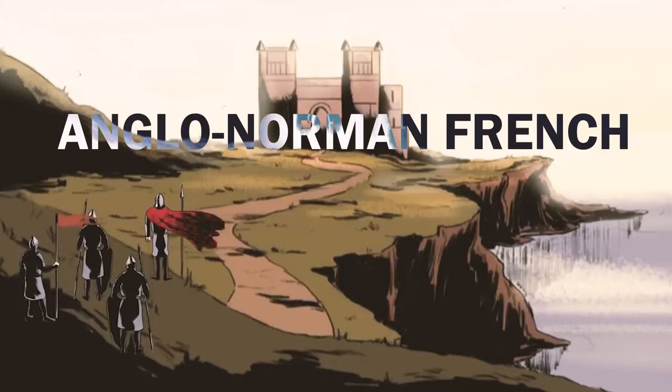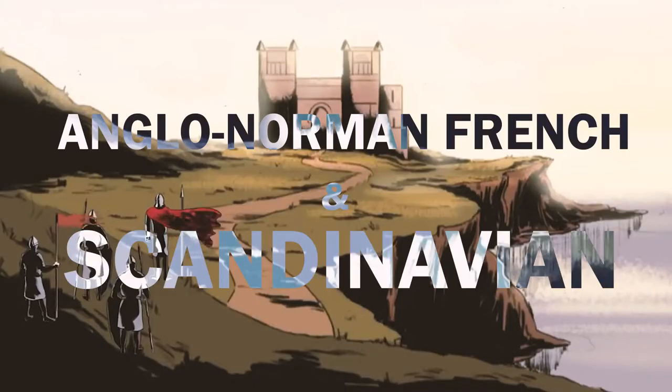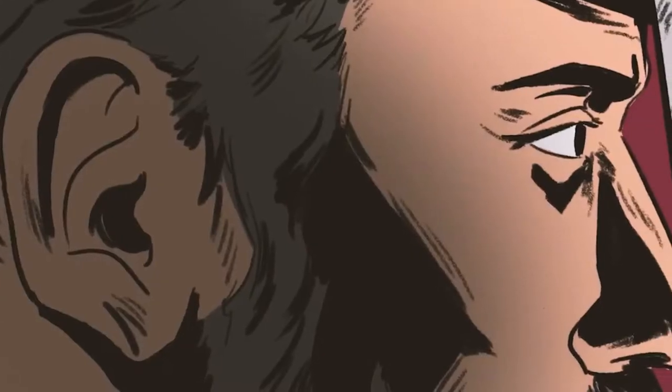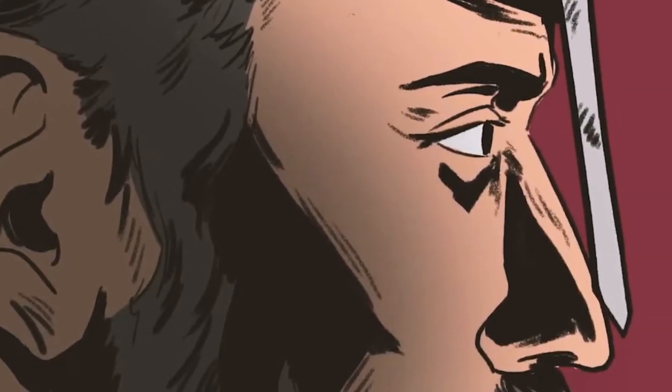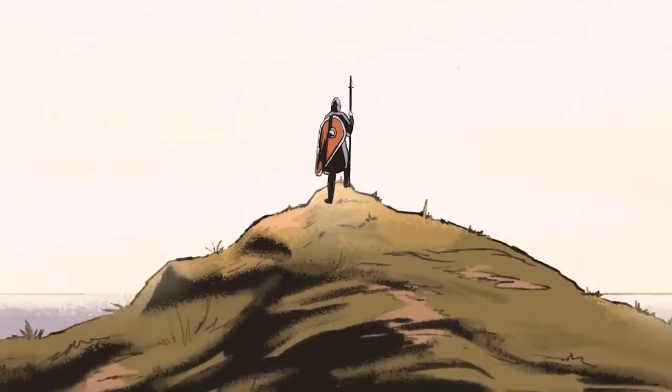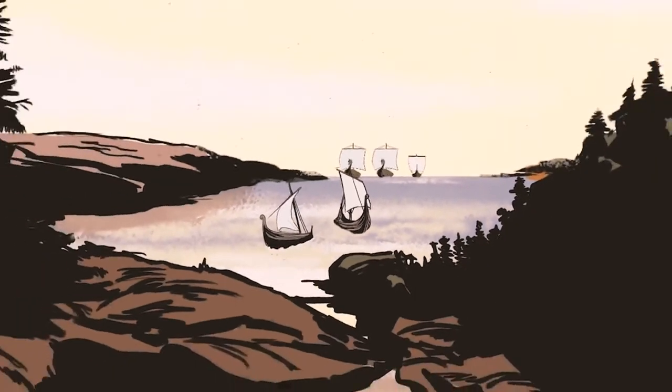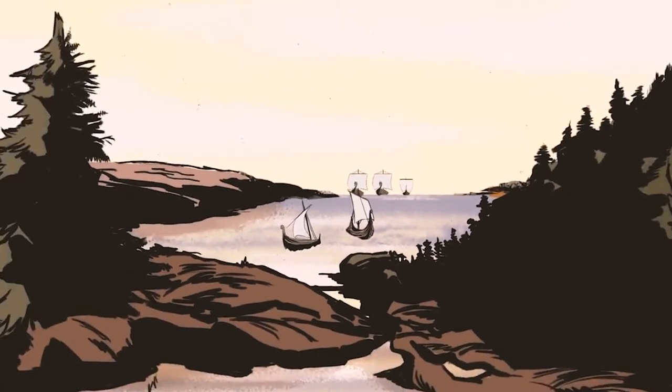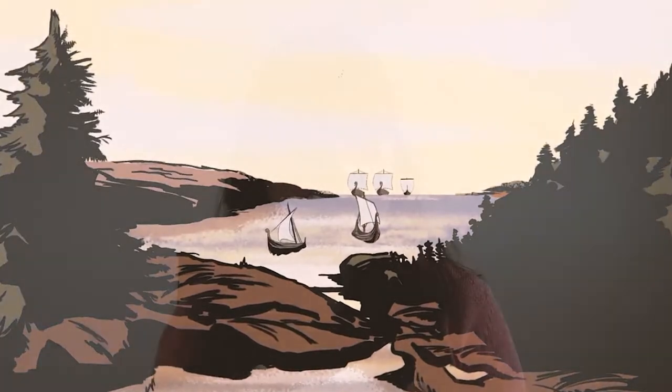The arrival of the Normans, led by the Duke of Normandy, who spoke Anglo-Norman French and Scandinavian, seems to be the most important event affecting the linguistic development of the English language, as the language of Wessex lost its special status after their arrival. The change in the English language is continuous; however, three particular features distinguish Middle English from Old English.